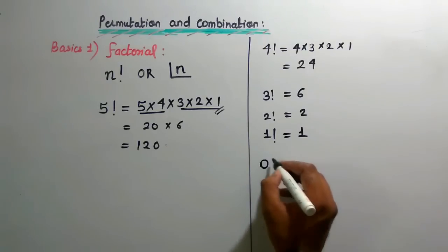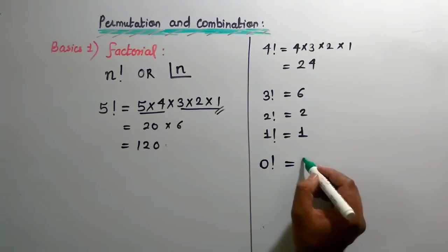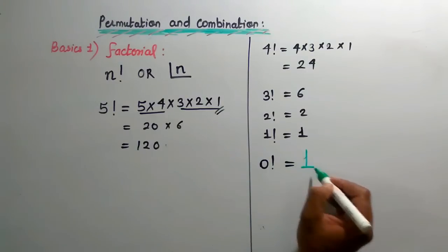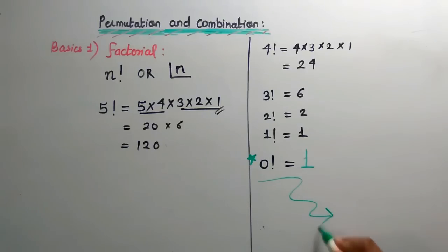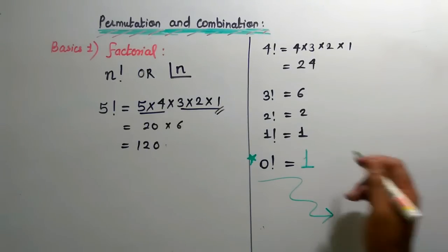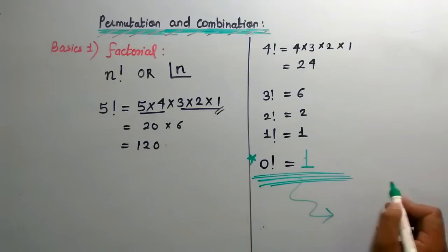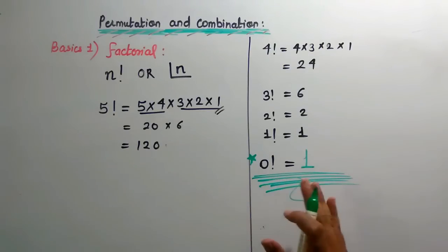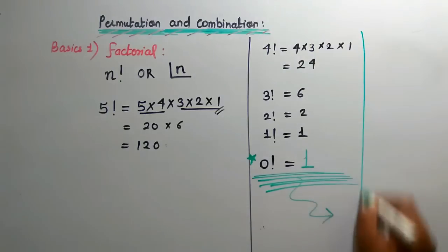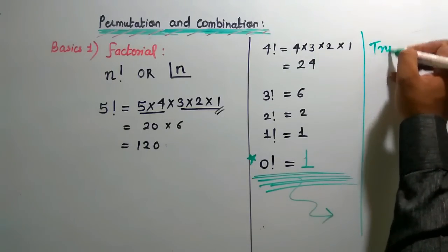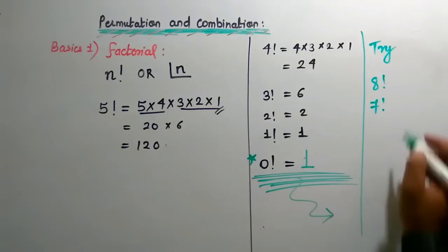Now what is 0 factorial? Zero factorial equals 1. Why? In the examination, there is no proof required — just for sake of reference, know that 0 factorial equals 1. That's it. Try to solve 8 factorial and 7 factorial on your own.